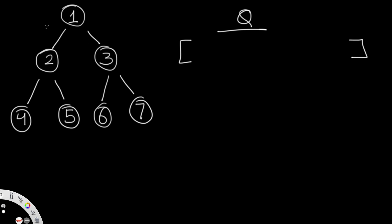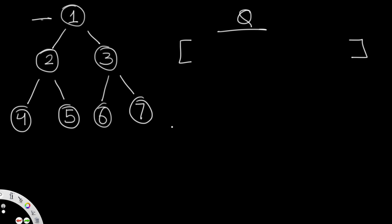In breadth-first search, we start with the root in our queue. We have a variable called current, which refers to whatever node we're currently on. We get its value by popping out the element at the zeroth index of the queue using popleft. So current becomes one. Now we want to set its next pointer — for node one, next is null, which is correct since it has no right neighbor.